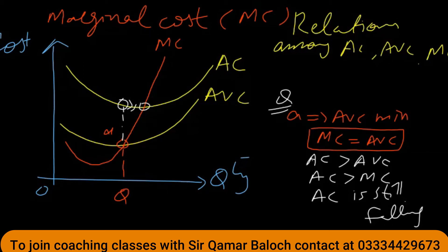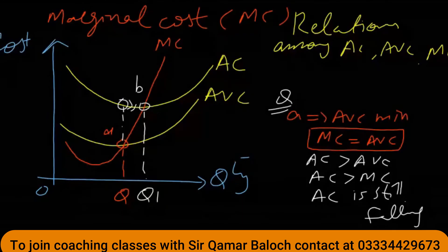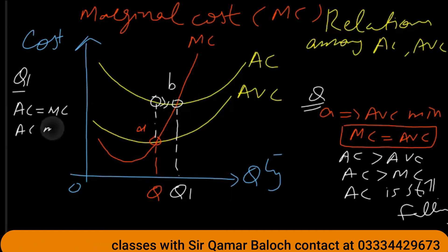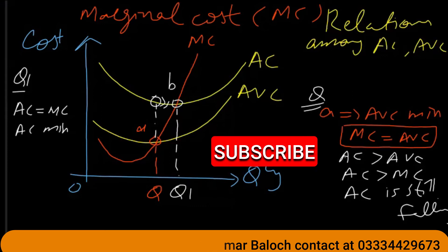At point B and output Q1, average cost is equal to marginal cost. This is the minimum point of average cost.